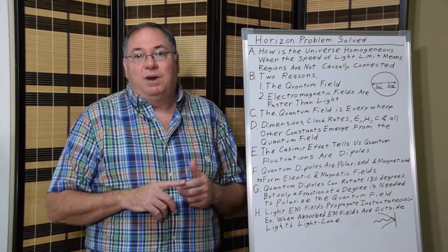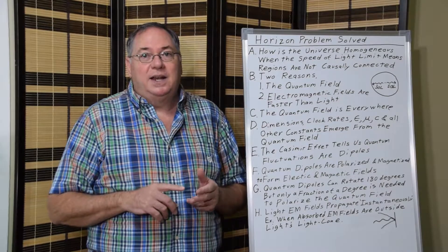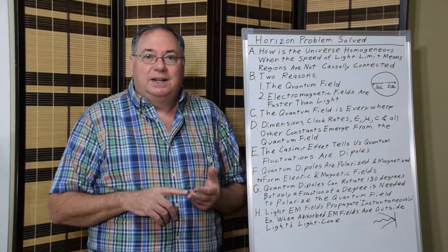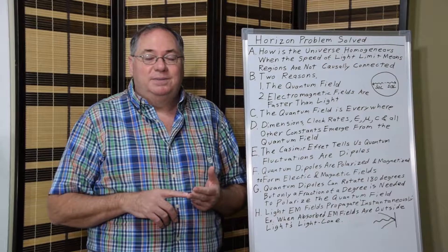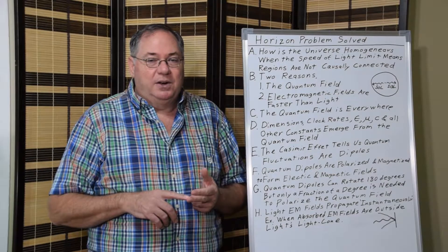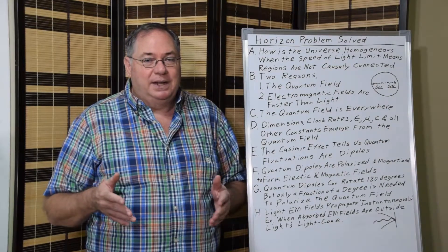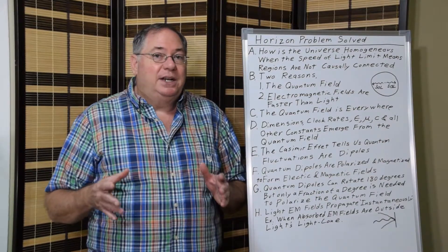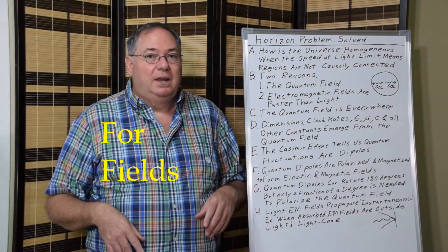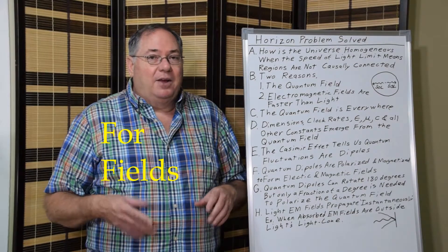And the first is the quantum field. And the second is the speed of light limit doesn't affect electromagnetic fields. And you won't find that in a textbook because relativists have said, oh, you can't exceed the speed of light. But actually, if you study Maxwell's equations, there's no speed of light limit.